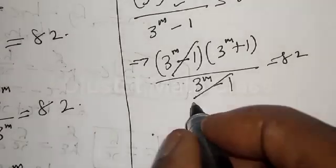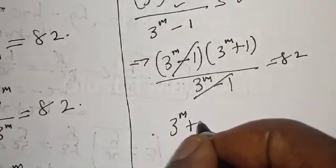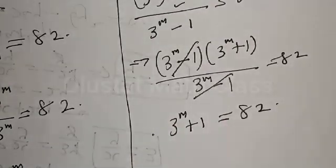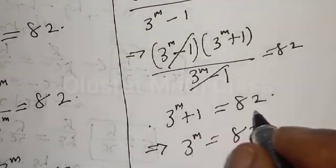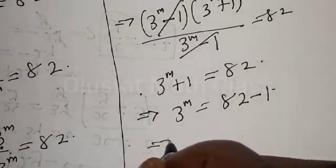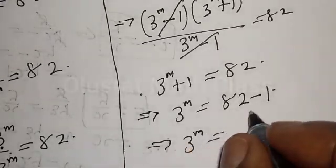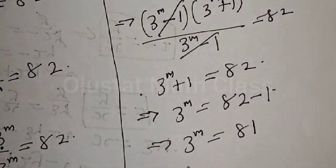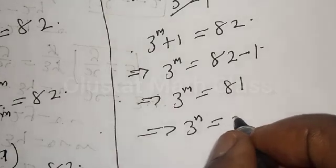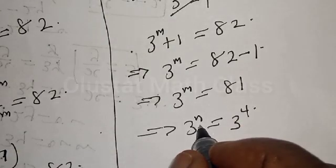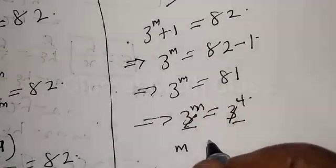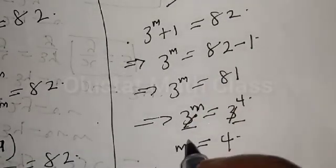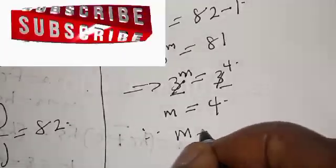We are left with 3 raised to power m plus 1 equal to 82. Therefore, 3 raised to power m is equal to 82 minus 1, which is 81. This implies 3 raised to power m equals 81, which can be expressed as 3 raised to power 4. Since we have the same base, m equals 4. Therefore our final answer is m is equal to 4.